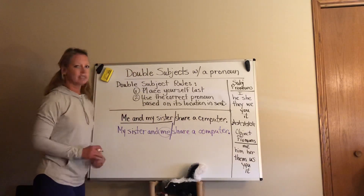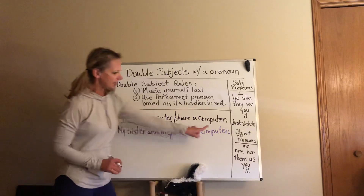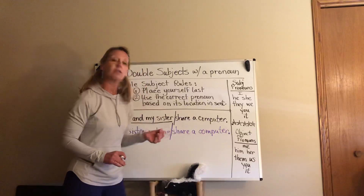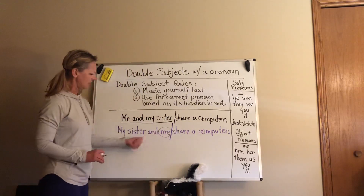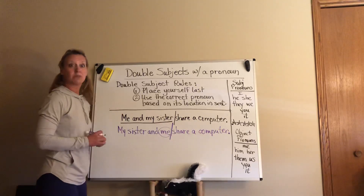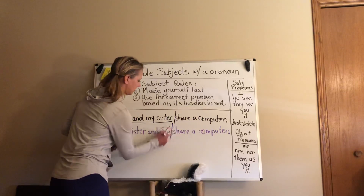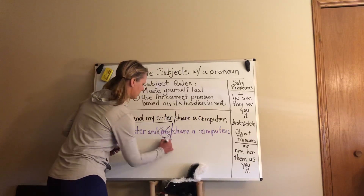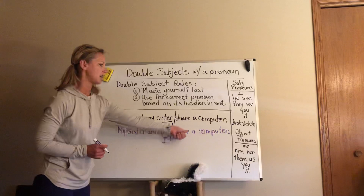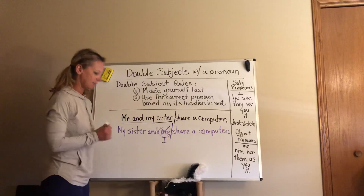These object pronouns can only be used in the predicate. You can clearly see that 'me' is an object pronoun — a predicate pronoun — and it can only be used in the predicate, but this is the subject. So I chose the wrong pronoun. I would need to change this to the word 'I,' so that it reads: 'My sister and I share a computer.' Now I have a correct sentence.